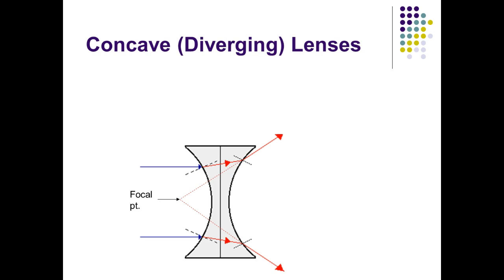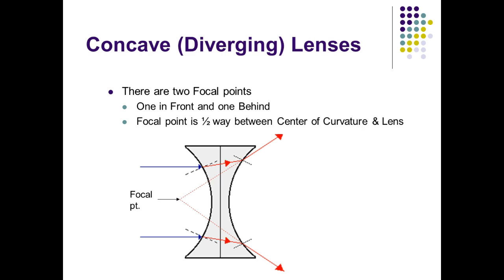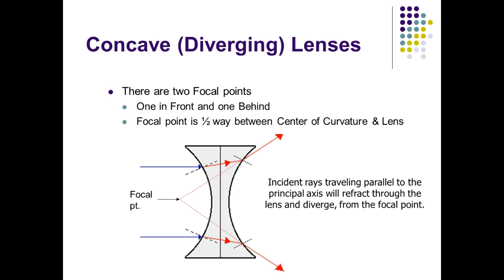Concave diverging lenses have a different set of rules. There are two focal points again — one in front, one behind. The focal point is halfway between the center of curvature. That center of curvature is the circle created by the curve of the lens, and the center of curvature is the point dead center — exactly twice the focal length. Incident rays traveling parallel to the principal axis are refracted out. So instead of being focused on a focal point, they're refracted out. However, the angle that they're refracted out at is based on the focal point that's on the other side.